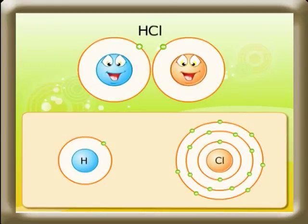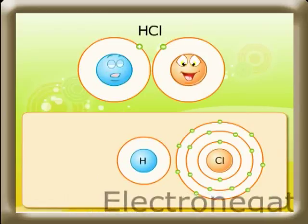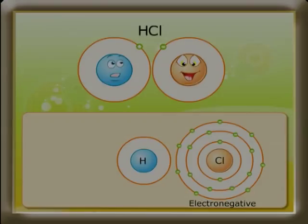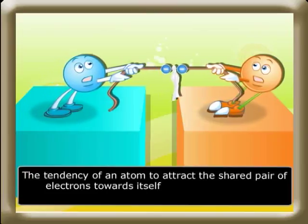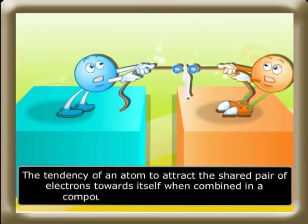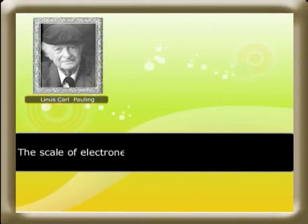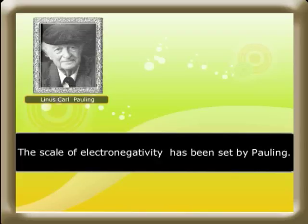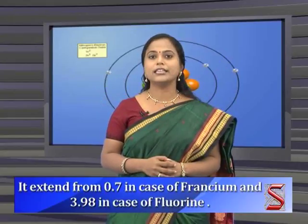In hydrogen chloride, chlorine is attracting the electron of hydrogen, meaning chlorine is more electronegative. Electronegativity is the tendency of an atom to attract the shared pair of electrons towards itself when combined in a compound. The scale of electronegativity has been set by Pauling, and it extends from 0.7 in the case of francium to 3.98 in the case of fluorine.